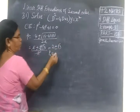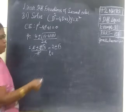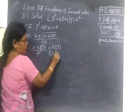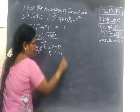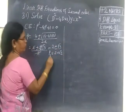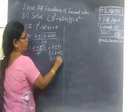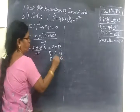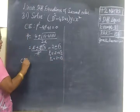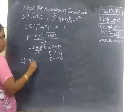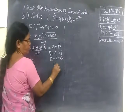Therefore P1 equals 2 plus root 3, and P2 equals 2 minus root 3. So the complementary function roots are different — distinct.